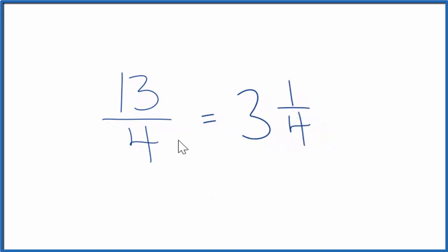If you divide 13 over 4, you would get 3.25. Just like 3 and 1 fourths, that's equal to 3.25. They're the same thing.